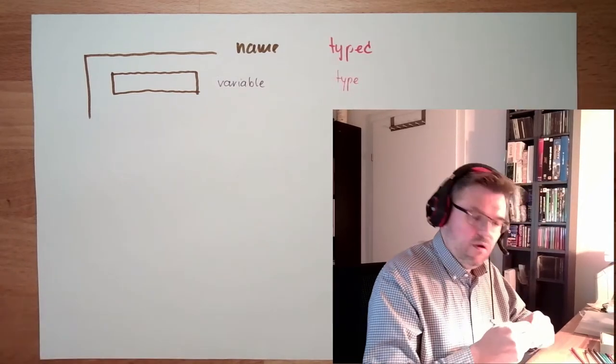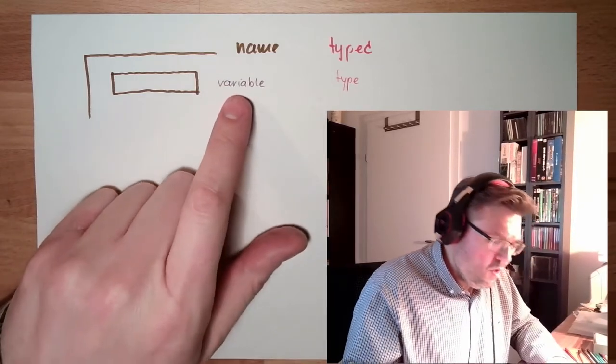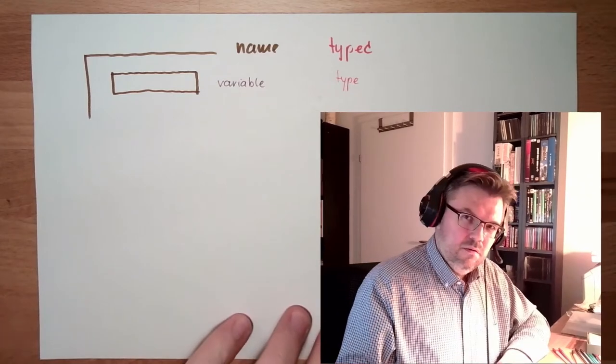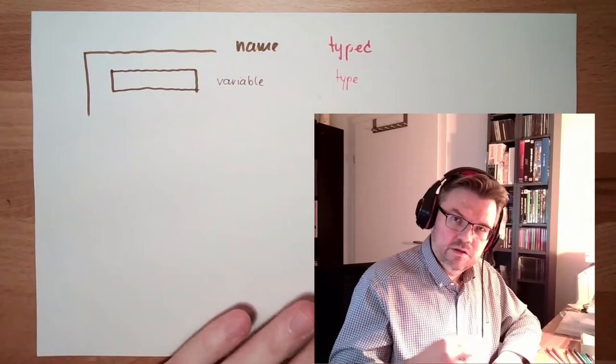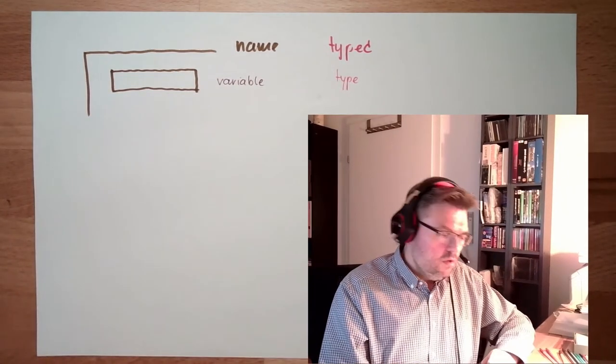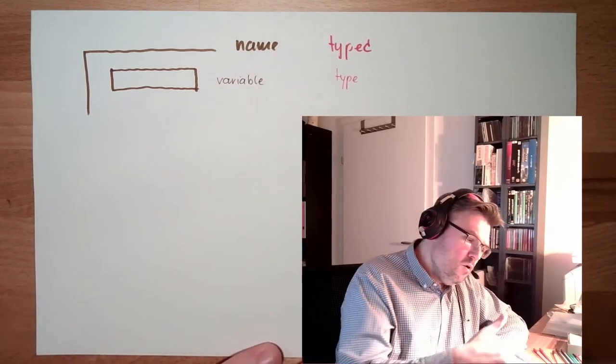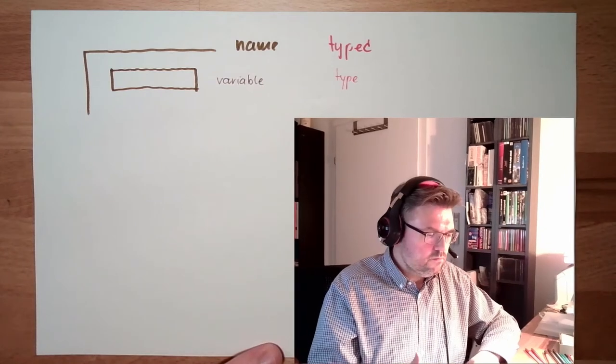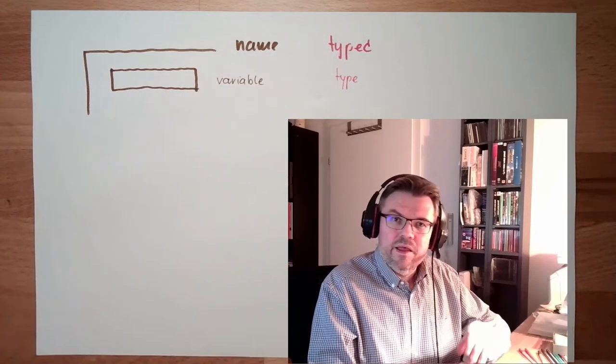What is a type? A type describes in more detail what I intend to store inside this variable. In typed programming languages, there's a data type for integer values, a data type for floating point values, and a data type for character strings.